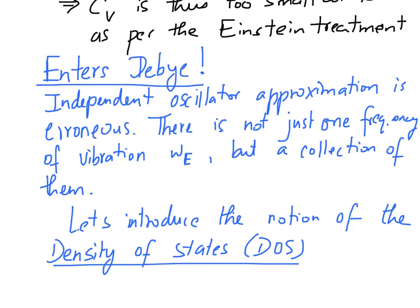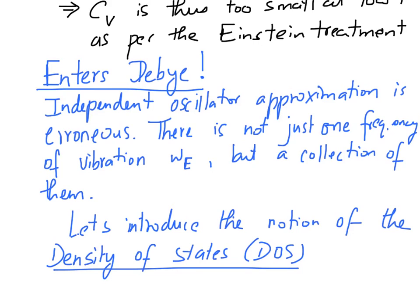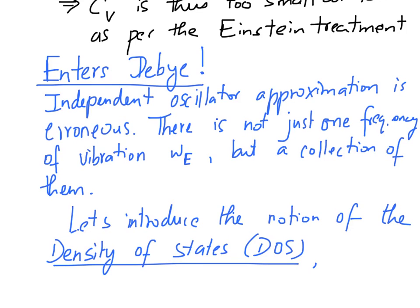We do this by introducing a new concept called the density of states. In the next lecture we will go deep into this concept, but for the purpose of this lecture concerning the Debye variation of the Einstein crystal, we will stay with a qualitative description. The density of states is essentially a measure of the distribution of states — in our case frequencies — and we represent it by G as a function of ω.